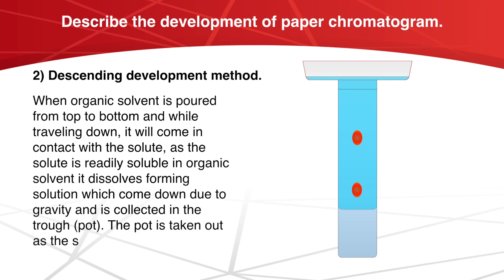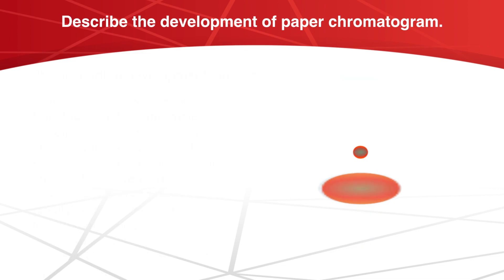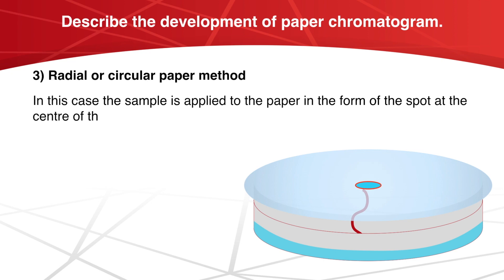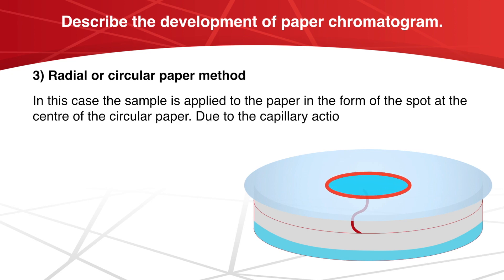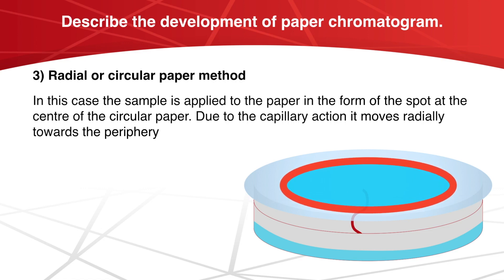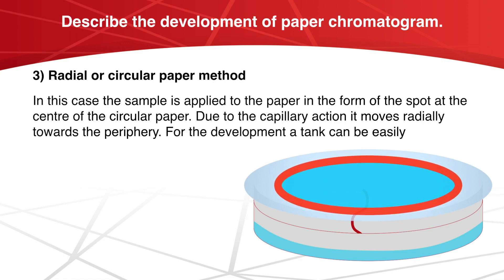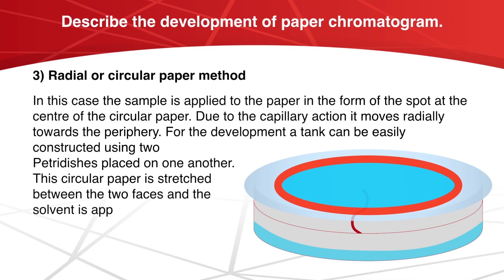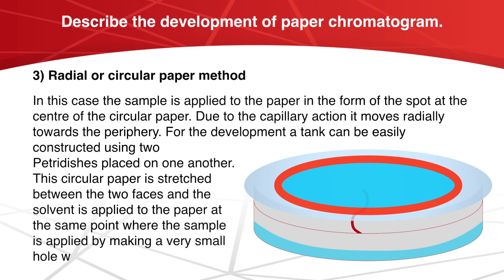The pot is taken out as the solvent is volatile and will vaporize, leaving behind the solute which is then analyzed. In radial or circular paper chromatography, the sample is applied to the paper in the form of a spot at the center of the circular paper. Due to capillary action, it moves radially towards the periphery. A tank can be easily constructed using two petri dishes placed on one another. The circular paper is stretched between the two faces and the solvent is applied at the same point where the sample is applied by making a very small hole with the help of cotton or a wick.